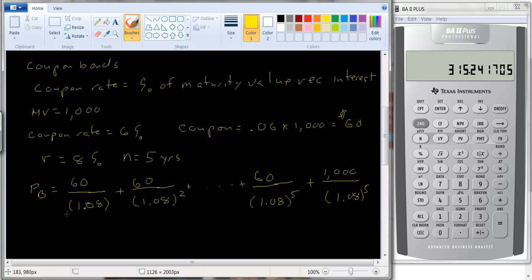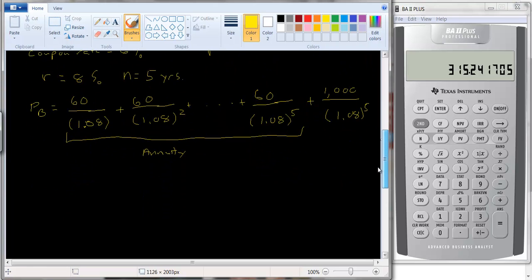Now one thing we can note is this part here is an annuity. So rather than have to calculate each part separately, we can use our annuity formula. And so if we wanted to calculate it using the formulas, we would get 60, and the annuity formula is 1 minus the present value factor, which would be 1.08 raised to the 5th power, divided by .08, plus 1,000 divided by 1.08 to the 5th power.